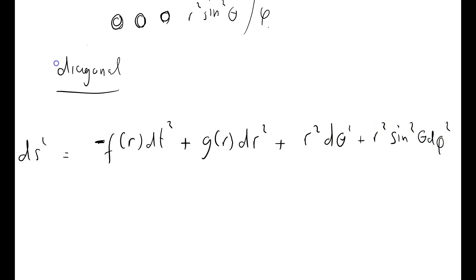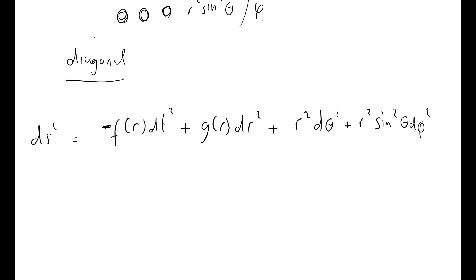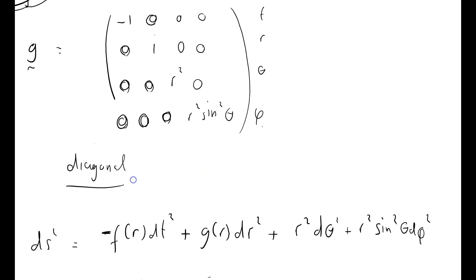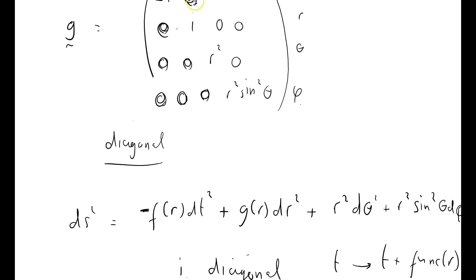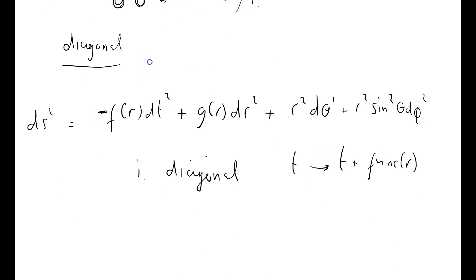I'm just going to consider line elements of this form. Make some observations. Number one, it's still going to be diagonal. I can get rid of off-diagonal elements, at least the T and the R components, quite easily, simply by sending T to T plus some function of R. If I just redefine my time coordinate, I can get rid of that. So I'm going to assume that's already been done.